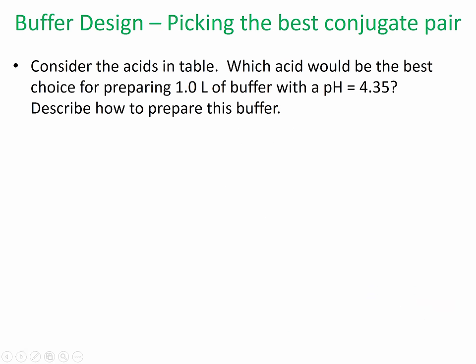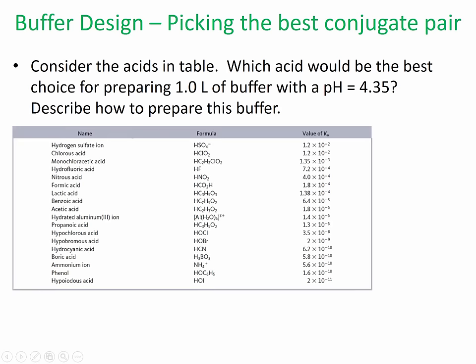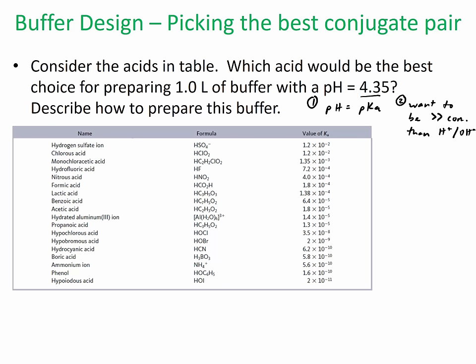I'm going to do this example. It says: consider the acids in the table — which acid would be the best choice for preparing a one-liter buffer with a pH of 4.35? Here's the table. Remember the first condition is we want the buffer's pKa to match the desired pH as closely as possible, and the other condition is we want it to be concentrated.